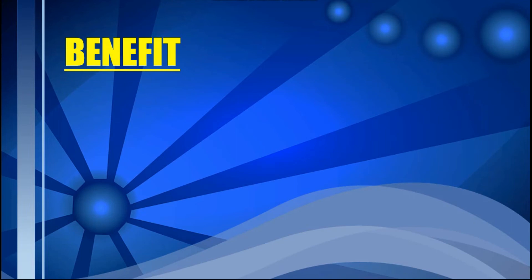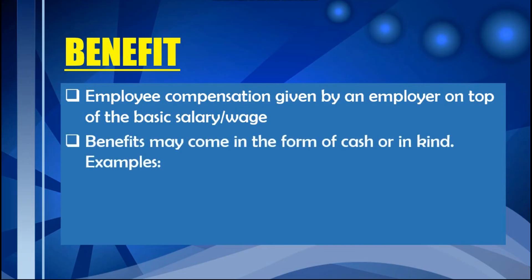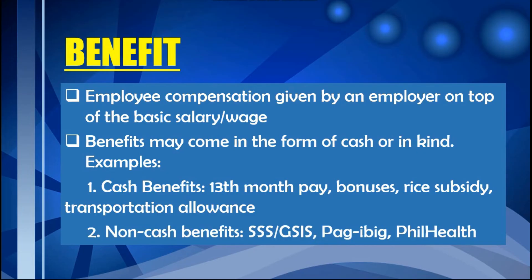Keep in mind that the basic wage or salary is not the only compensation an employee receives — most are also given additional benefits. Benefit refers to employee compensation given by an employer on top of the basic salary or wage. Benefits may come in the form of cash or in-kind. Examples of cash benefits include 13th-month pay, bonuses, rice subsidy, and transportation allowance. Non-cash benefits include government benefits such as SSS or GSIS, Pag-IBIG, and PhilHealth.